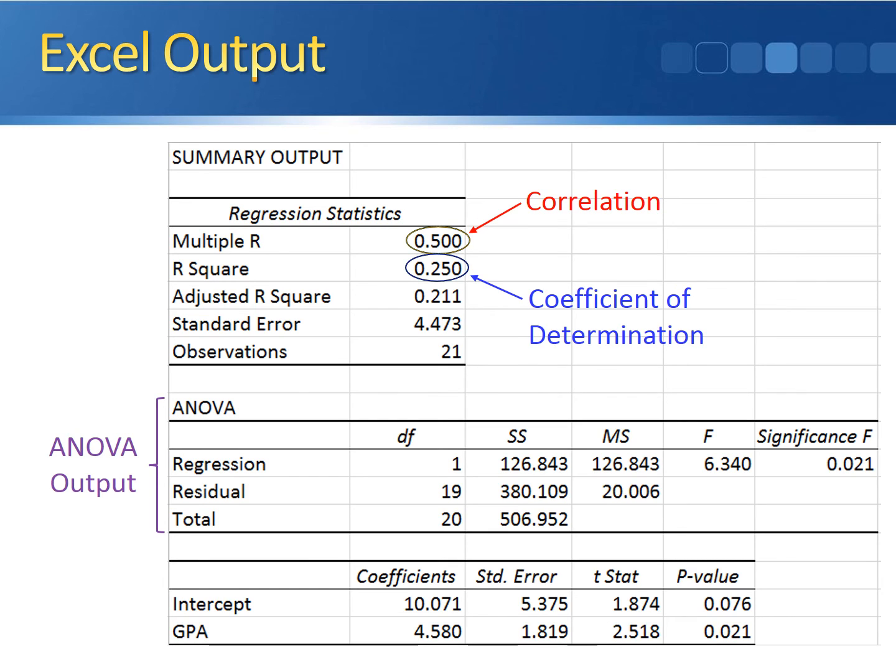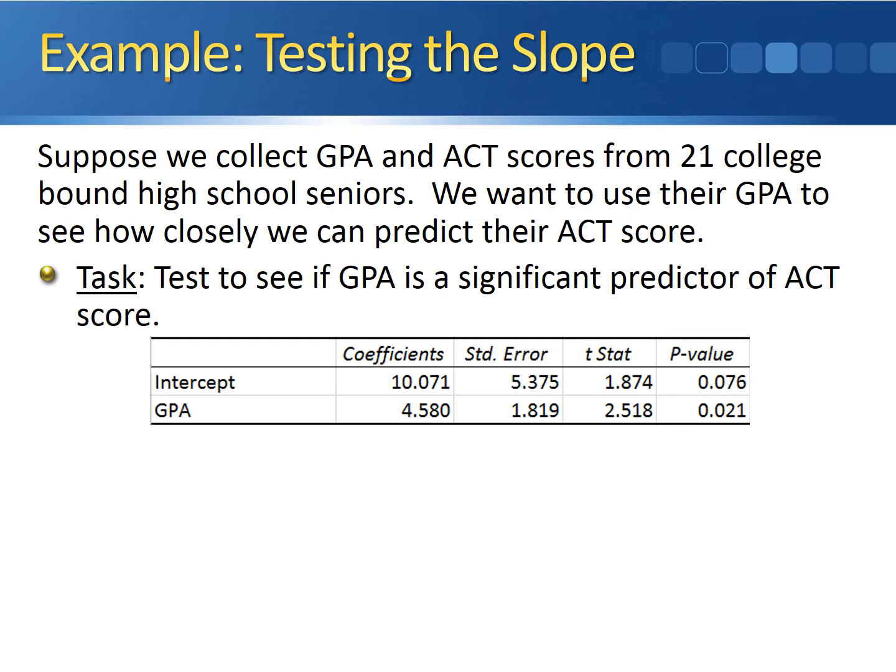Moving down to the second output, we have an ANOVA output. We're not going to use this directly right now, but we'll take a look at this later on whenever we talk about multiple regression. The third output we'll call the coefficient output. The coefficient output is the output that's going to allow us to test whether or not the slope of the regression line is significantly different from zero. Let's take a closer look at the coefficient output for using GPA to predict ACT score.